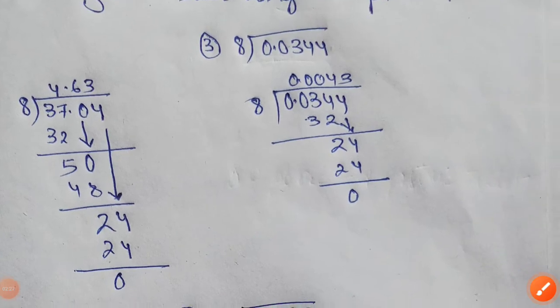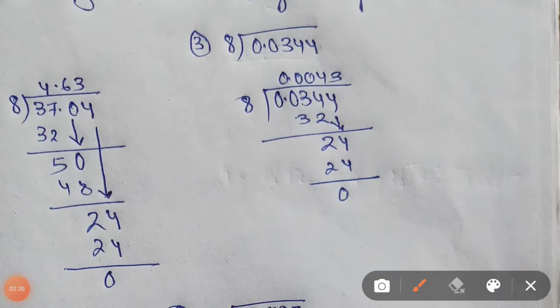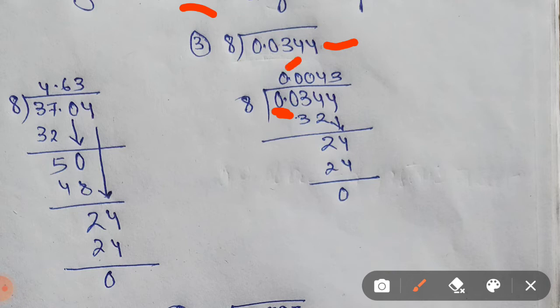Now let us try question number 3 in the same manner. In question number 3 we have 0.0344 as our dividend and divisor is 8. Since in the first place we have 0, and you do not have 0 in the 8 table, we will take 0 up with the decimal point. And now again after the decimal point we have 0 again, so we do not have 0 in the 8 table. We will take this 0 up as well.